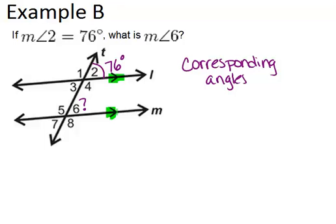So that means because the lines are parallel, the corresponding angles have to be congruent, which means that the measure of angle 6 has to be 76 degrees, just like angle 2 was. So this will be 76 degrees as well. So because the lines are parallel, the corresponding angles are congruent.